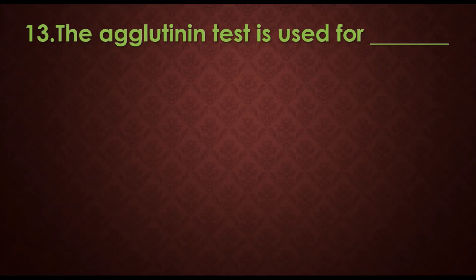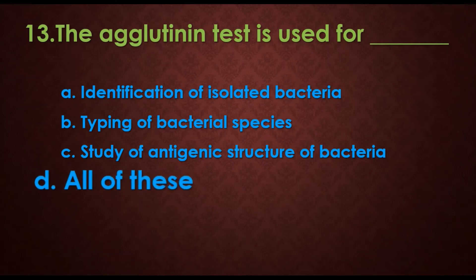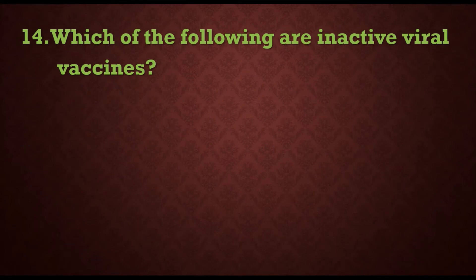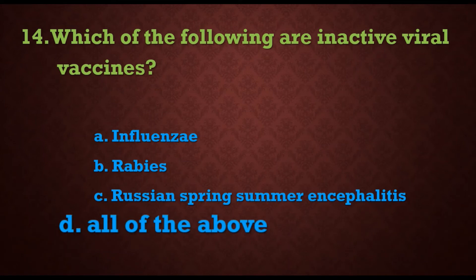Thirteenth question: the agglutinin test is used for — options are: a) identification of isolated bacteria, b) typing of bacterial species, c) study of antigenic structure of bacteria, d) all of these. The answer is d) all of these. Fourteenth question: which of the following are inactivated viral vaccines? Options are: a) influenza, b) rabies, c) Russian spring-summer encephalitis, d) all of the above. The answer is d) all of the above — influenza, rabies, and Russian spring-summer encephalitis vaccines are all inactivated viral vaccines.